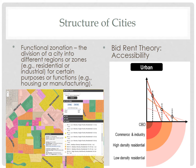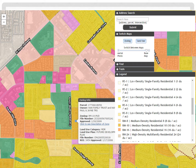But before we look at the specific models, let's examine a few important concepts that form the foundation for those models. Tonight, we start with the concept of functional zonation, which is the division of a city into different regions or zones — things like residential or industrial — for certain purposes or functions, like housing or manufacturing. Functional zonation is the idea that regions within an urban area have specific and distinct land uses and purposes. These functions could be to house residents, which we call residential, or for retail or office activities in commercial zones, while manufacturing would take place in an industrial zone. If a region combines different functions, we call them mixed use.